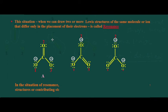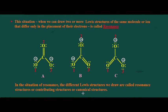This situation, when we can draw two or more Lewis structures of the same molecule or ion that differ only in the placement of their electrons, is called resonance. The different Lewis structures we draw are called resonance structures, or contributing structures, or canonical structures. Here, A, B, and C are the resonance structures of carbonate ion.